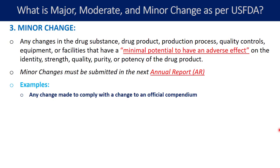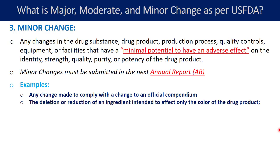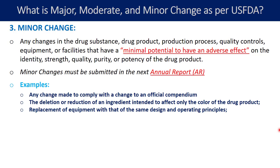Examples of minor changes include: any change made to comply with a change to an official compendium — if there is any difference between your specification and the compendium, you can make changes to achieve compliance; deletion or reduction of an ingredient intended to affect only the color of the drug product — so excipients that are part of your color composition can be changed; and replacement of equipment with that of the same design and operating principles, where even if the brand name differs but the design and operating principles are equivalent, that qualifies as a minor change.